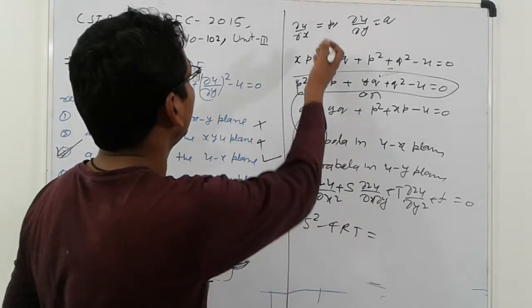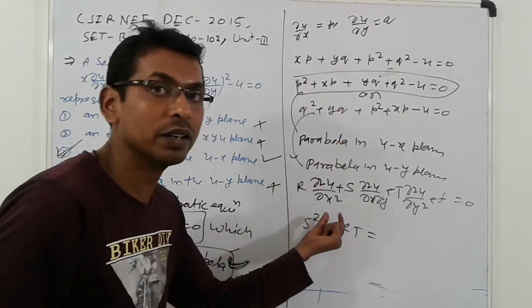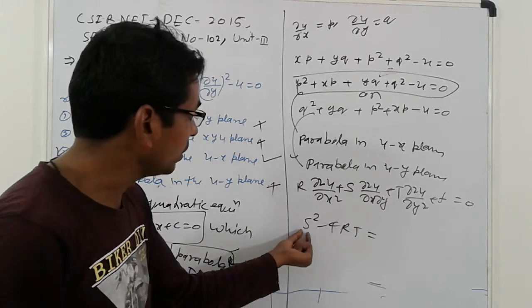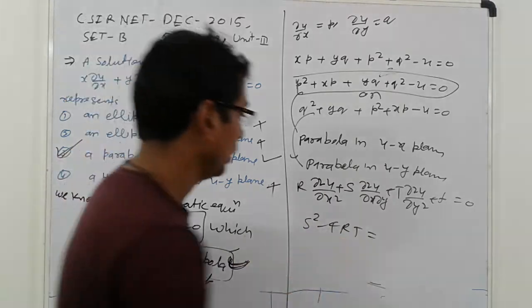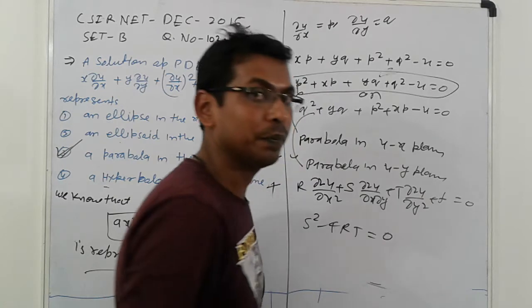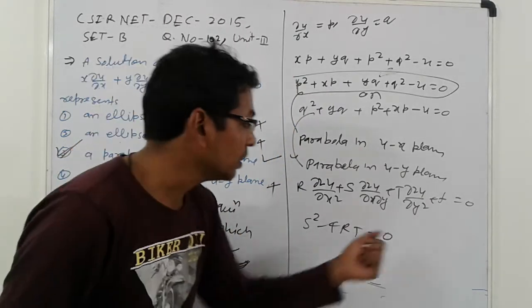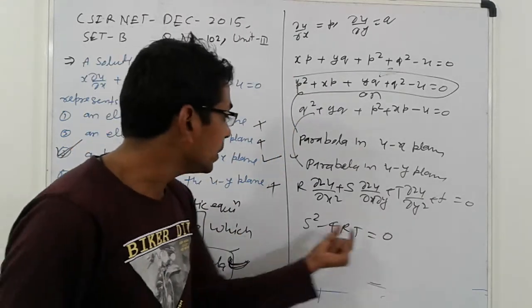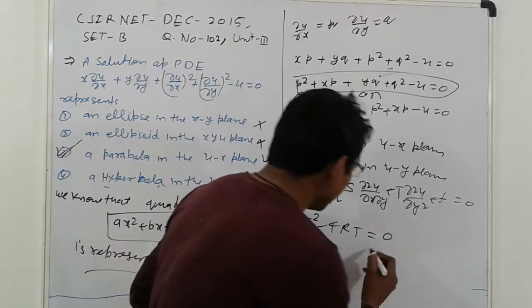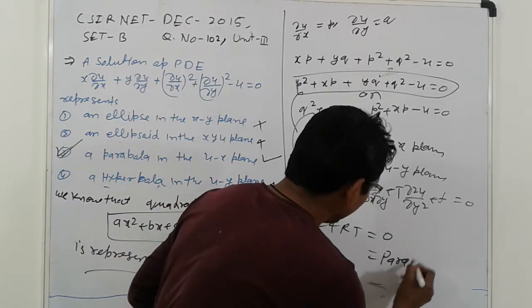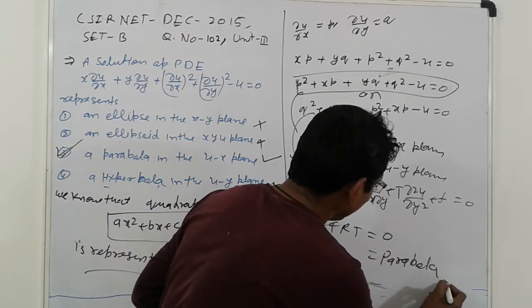So in that case, the original form, you will find r, s, t. And finally, s square minus 4rt. What is the s? No term present in the given differential equation. Not a second order term present. S square, s=0, r=0, t=0 means 0. That is 0, which is represented by parabola.